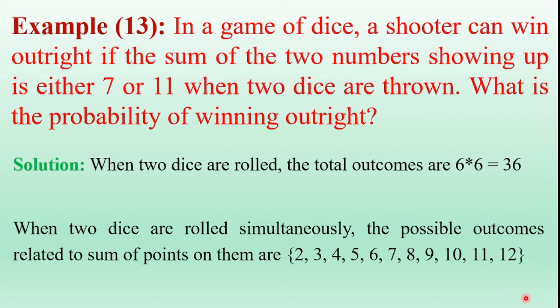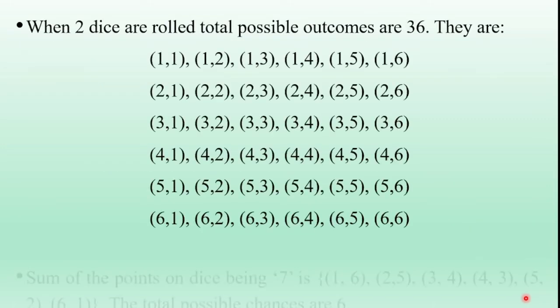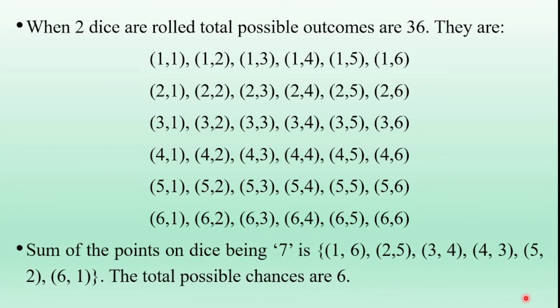Now we find the probability that the sum of the two numbers showing up is either 7 or 11. Let us consider two events: Event A is defined as the sum of the points on the dice being 7, and Event B is defined as the sum of the points on the dice being 11.